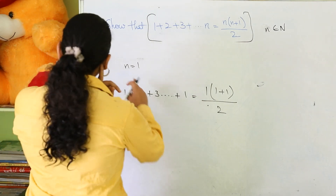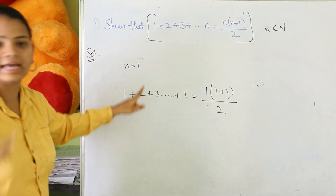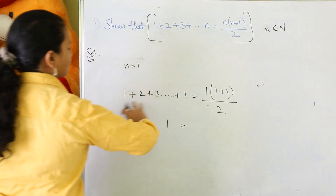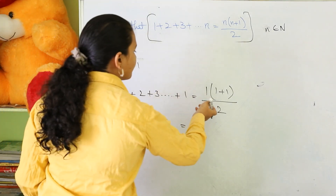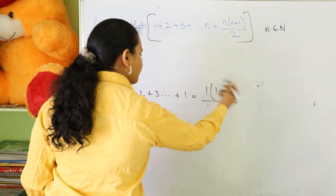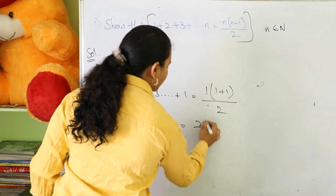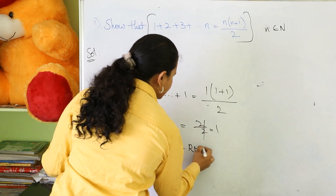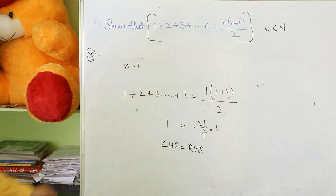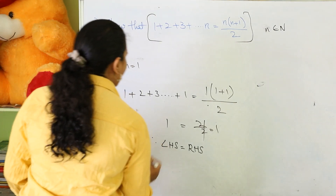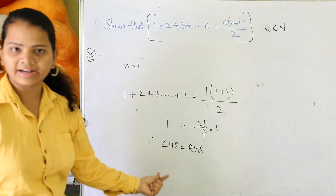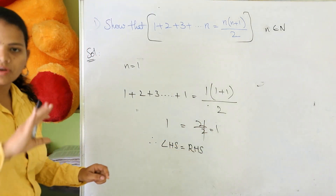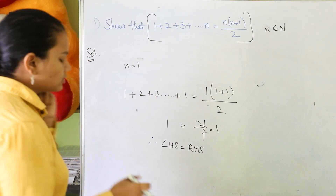Here, when n equal to 1, the nth term equals 1, so the LHS side will be 1. For the RHS, we have 1 into 1 plus 1 by 2, which is 2 by 2, equal to 1. So therefore LHS equals RHS — LHS value is 1, RHS value is 1. Both were proved and balanced, so that is proved.